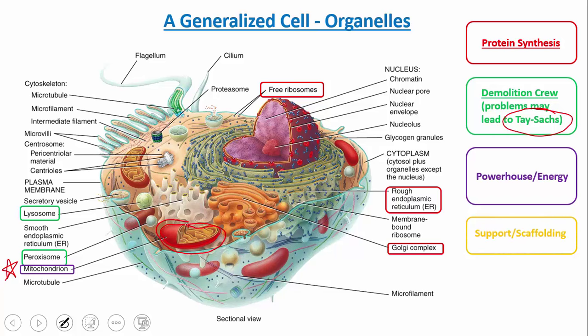The next category is proteins involved in support and scaffolding — these are called the cytoskeleton. There are specifically three different kinds: microtubules, which are involved in chromosome division; microfilaments, which are involved in the cell splitting; and intermediate filaments, which sort of line the inside of the nucleus.